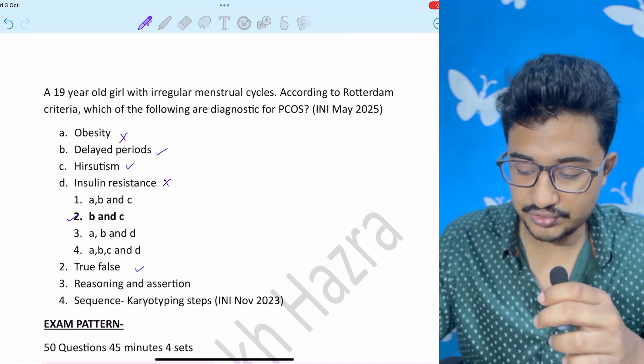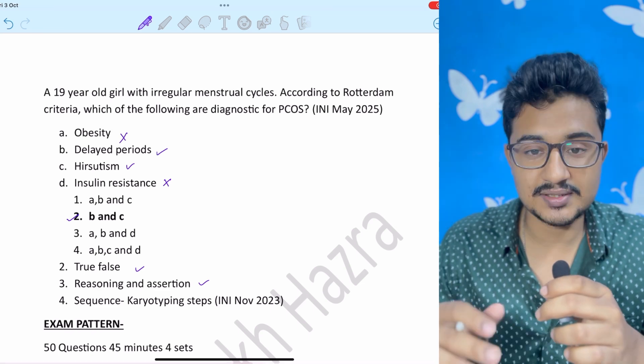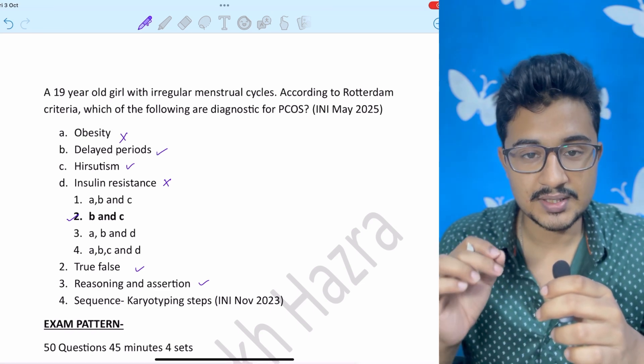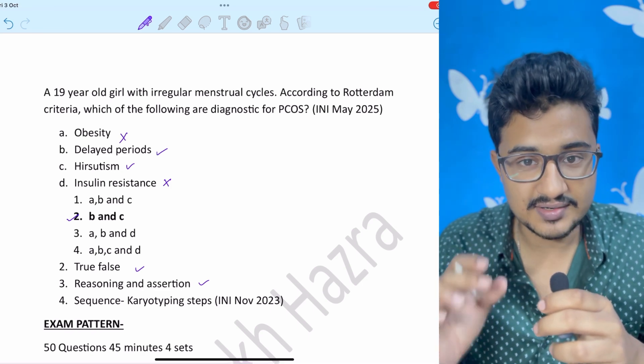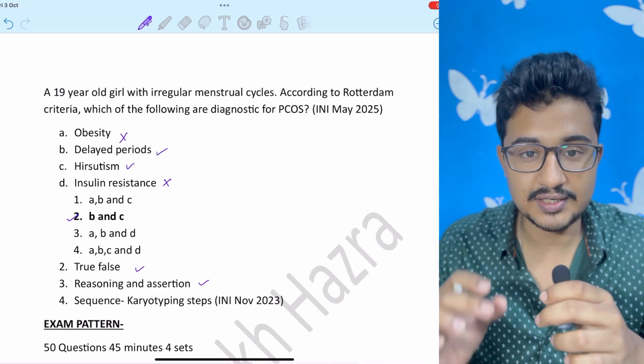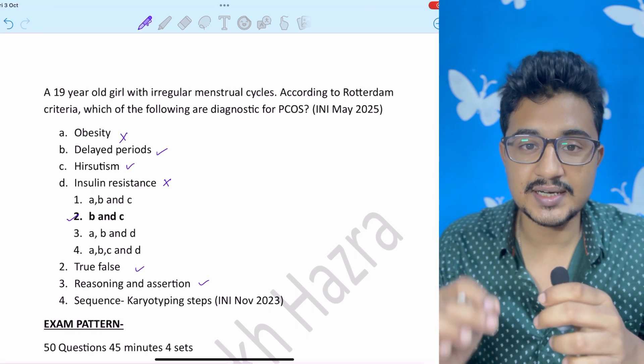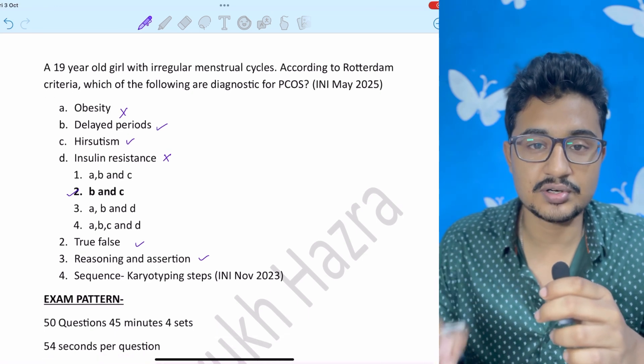True false questions are asked reasoning assertion. Sometimes they will give you two statements. Assertion whether it is correct or not and reason whether it is correct or not and if correct it is the correct explanation to the assertion or not.